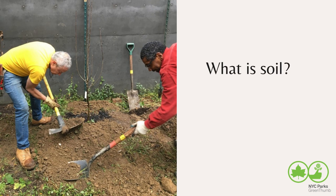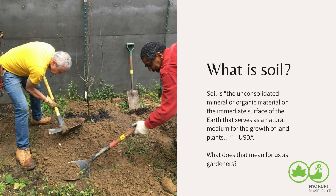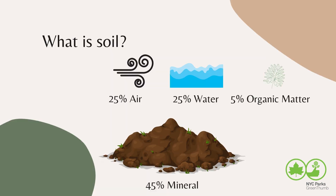So what is soil? The USDA's definition is: soil is the unconsolidated mineral or organic material on the immediate surface of the earth that serves as a natural medium for the growth of land plants. But what does that mean for us as gardeners?